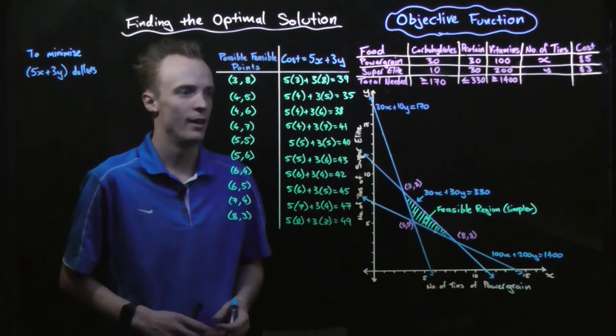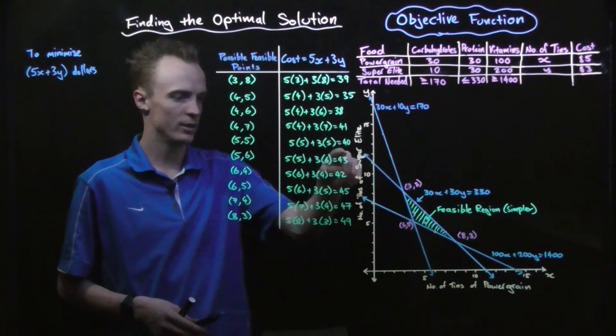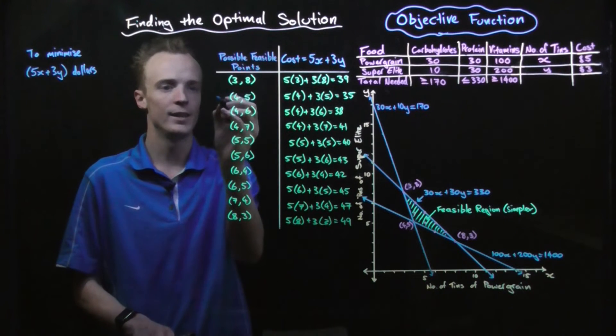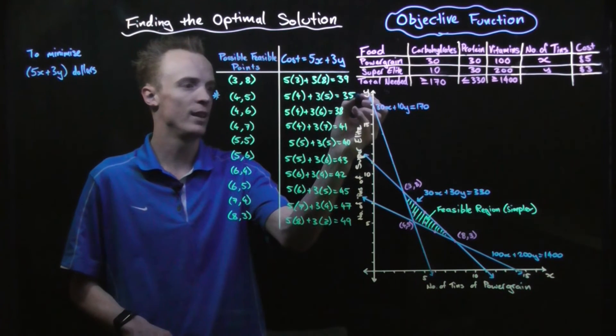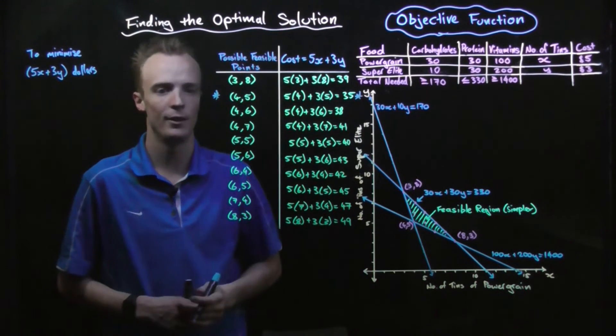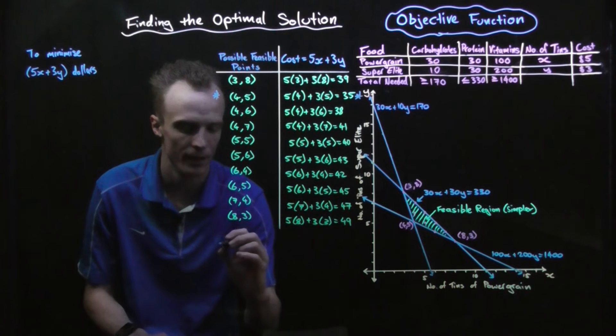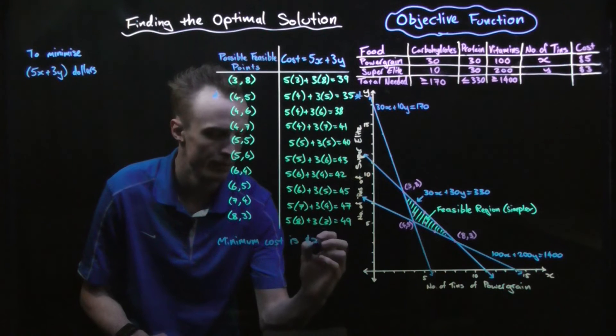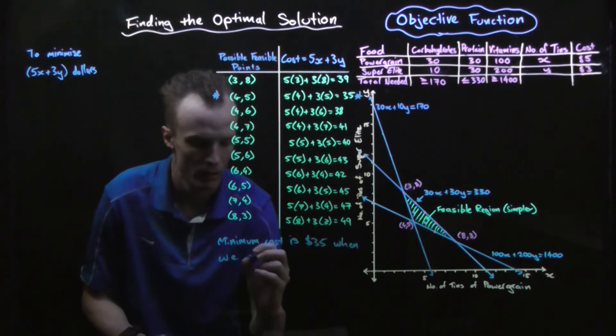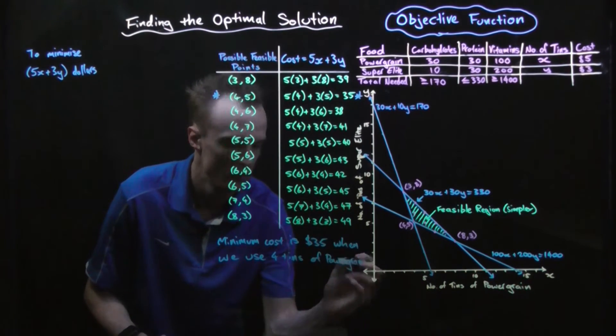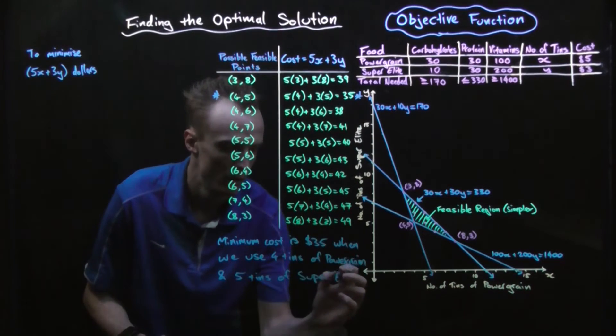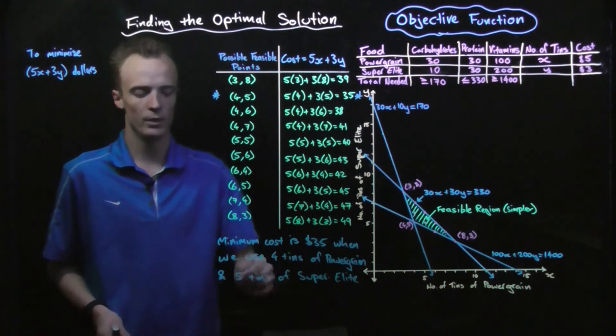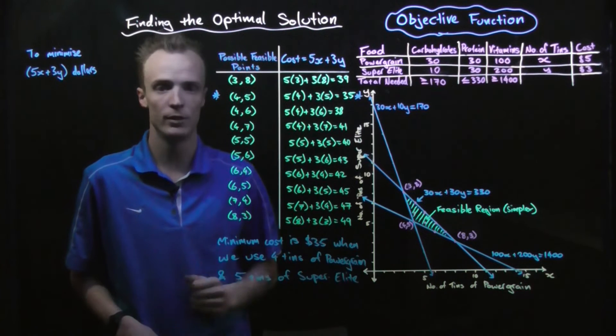So now I've done that, I can look at the total cost of every combination and see that this combination here is my cheapest value. So the minimum cost here is $35 when we use four tins of power grain and five tins of super elite.